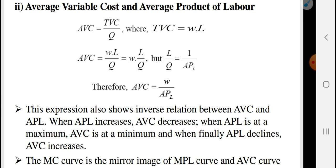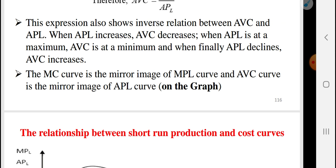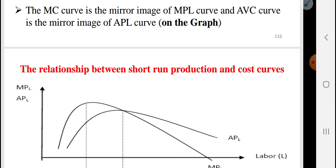Looking at the graph, the marginal cost curve is the mirror image of the marginal product of labor curve. Similarly, the average variable cost curve mirrors the average product of labor curve. As one increases then decreases, the other decreases then increases — a natural inverse relationship shown graphically.